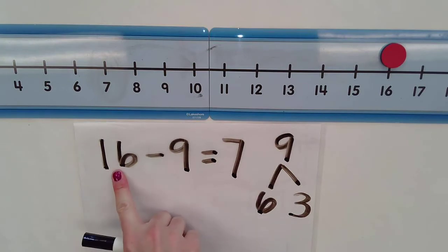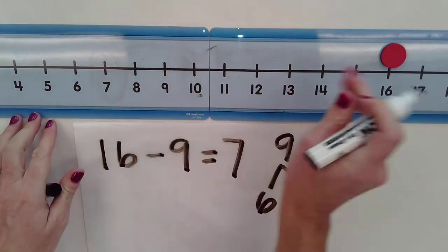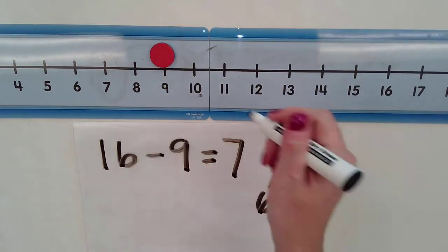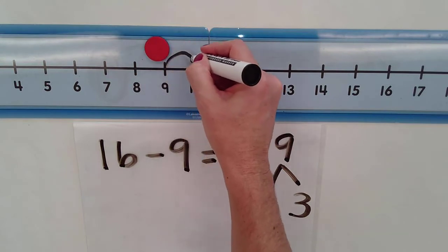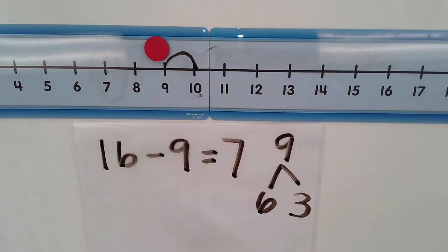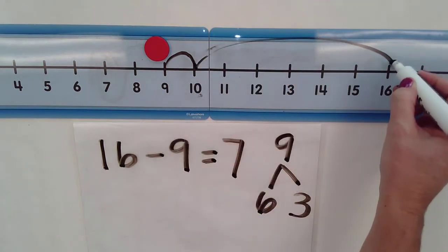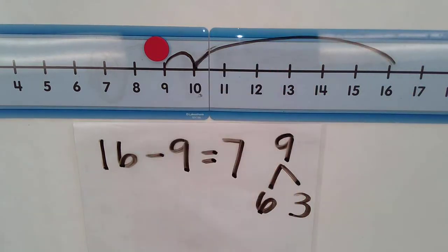And again, if I'm going from 16 minus 9, this time I'm going to start with a number 9. And I know I need to get up to 16. So in order to make that number, I know I need to make one jump to make 10. And then I know I need to make a jump of 6 to get to 16.